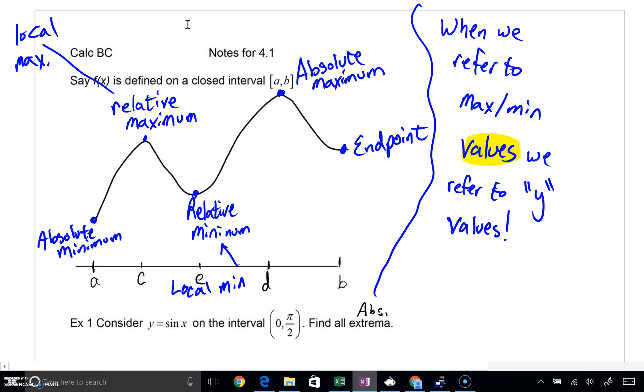So 4.1, in this chapter look up to this right-hand side. When we refer to max and min values, and while that will be brought up repeatedly when you'll be asked to find the absolute maximum value or the absolute minimum value, please realize we are referring to Y values, to the Y values. Very, very, very important.